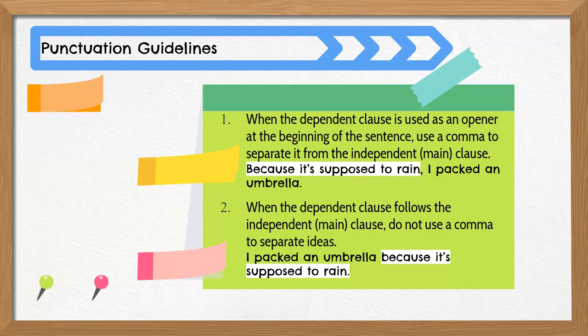Rule number two: when the sentence begins with an independent or main clause, do not use a comma. For example: I packed an umbrella because it's supposed to rain. I packed an umbrella is the main or independent clause. The sentence begins with the main idea, so it's not necessary to use a comma to signal the reader, since it's not extra information.